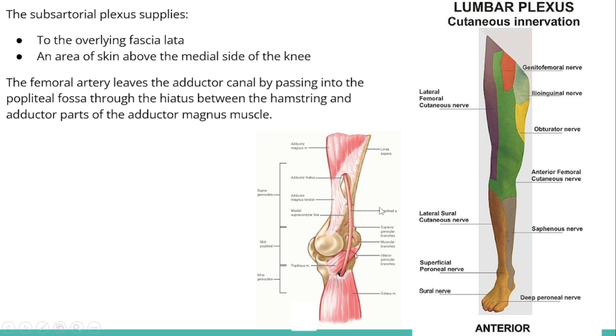A few words about the subsartorial plexus: it supplies sensory innervation to the overlying fascia lata.